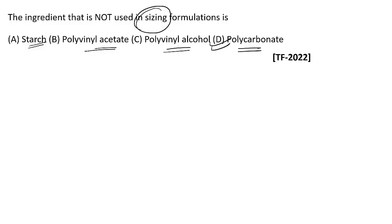Polycarbonate is not used as a sizing ingredient because in polymeric compounds used for sizing, the idea is to maintain a straight-chain structure that facilitates the sizing process. Polycarbonate, due to its complex structure, does not fulfill this. In contrast, starch, corn, and CMC are used and form a lubricating layer that facilitates the weaving process.